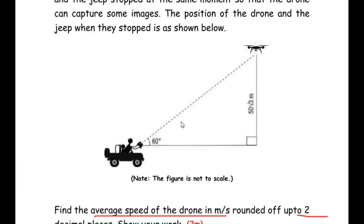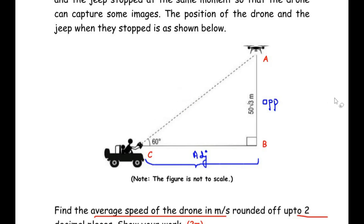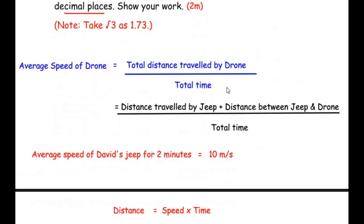Next we find the distance between the jeep and the drone after two minutes. This represents a right angle triangle. The angle of elevation is 60 degrees. The side opposite to 60 degrees is AB, and its value is given as 50√3. The side opposite to 90 degrees is the hypotenuse, and BC is the adjacent side — the horizontal distance between the jeep and the drone. We do not need the hypotenuse, so we use tan.